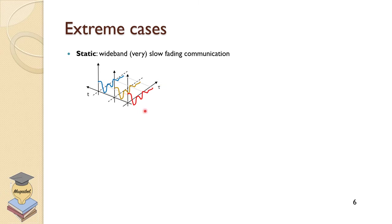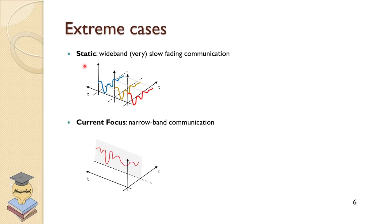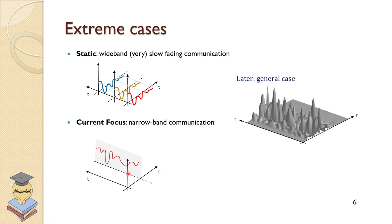Our current focus is narrowband channels: the received signal arrives at a given tau without extending over time, but the response changes with time — different amplitudes at different instants, all arriving at the same time. This means no spread and narrowband communication. Later we will consider the most general case where the response at different time instances is completely different — different in T and different in tau.